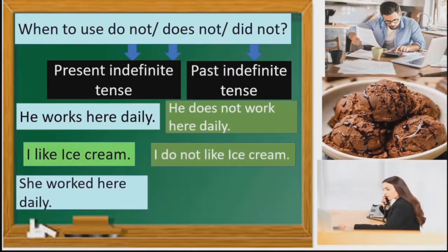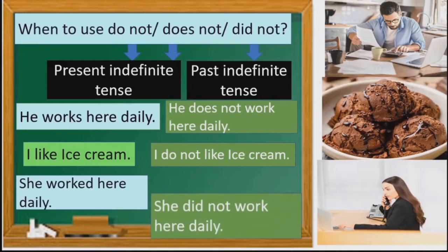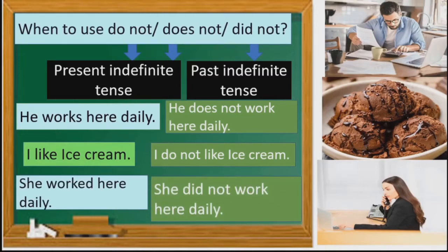Next example: 'She worked here daily' becomes 'She did not work here daily.' Children, why do we use 'did not'? Because this is in past indefinite tense. And how can we identify that it is past indefinite tense? Because of V2. So this is past indefinite, so we use 'did not.' 'Worked' will change into 'work.'